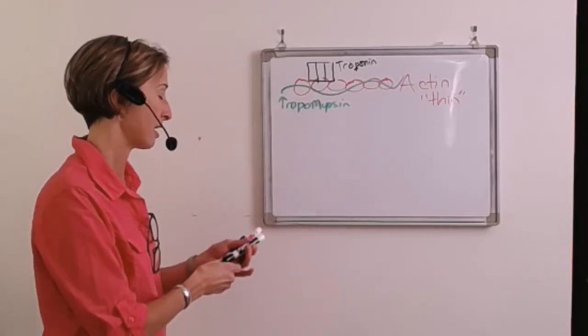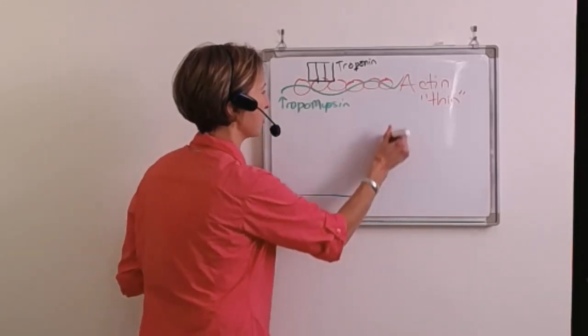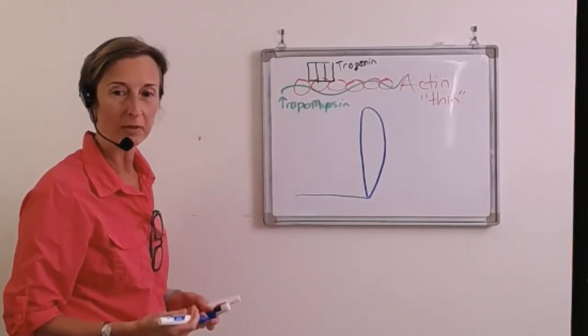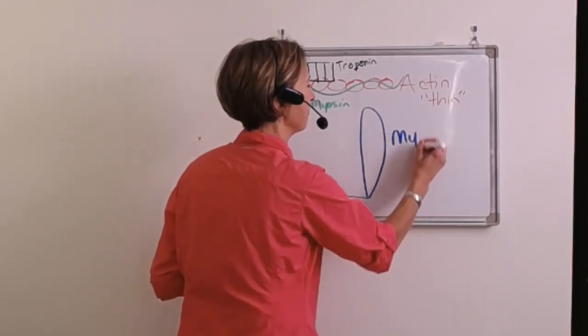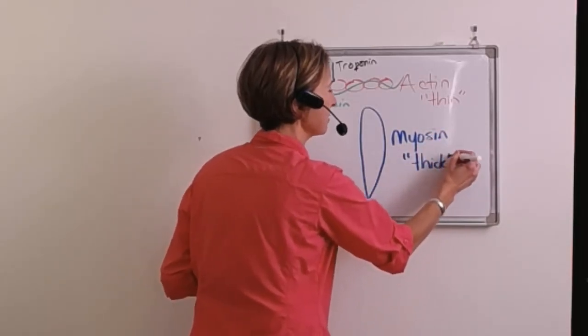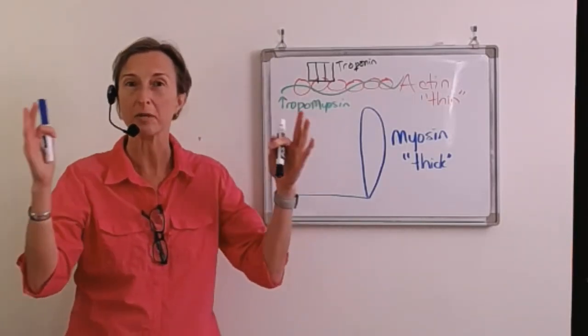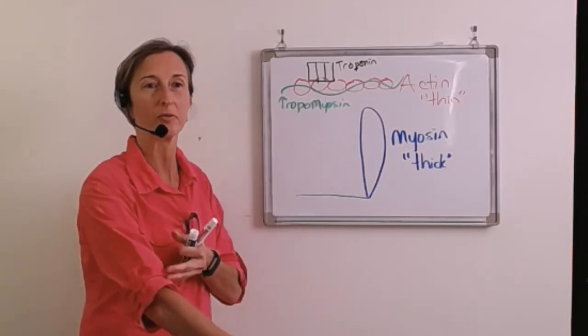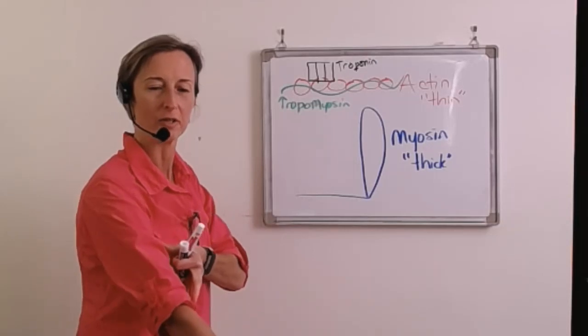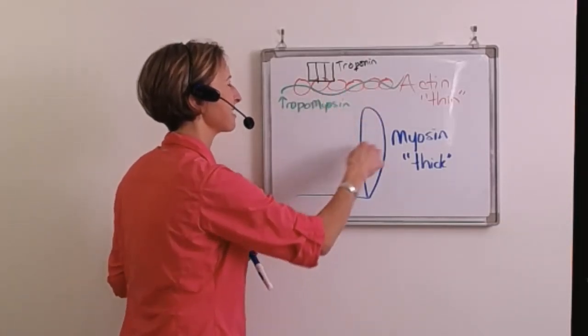And so troponin and tropomyosin are the two regulator proteins. They're going to control whether or not actin gets to interact with this much larger protein called myosin. And these myofilaments, here's myosin, this is the thick filament. These are the filaments that are involved in making the skeletal muscle shorter. In other words, to make your bicep go from long or extended to flexed. And so the length of the muscle will actually change. How does that happen at this level?